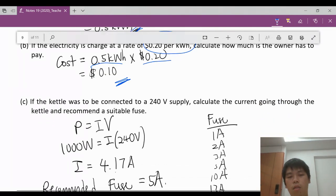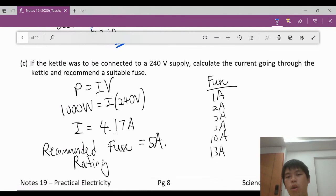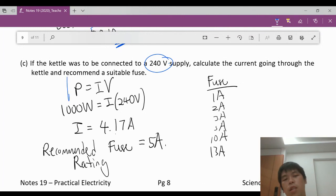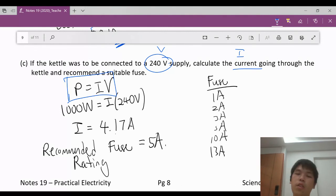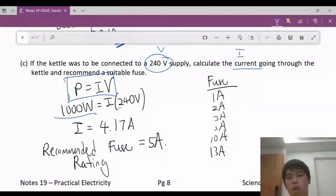So, if the kettle was to be connected to 240 volt supply, now you're connected to the mains in Singapore. Calculate the current going through the kettle and recommend a suitable fuse. So, we use P equals IV. Because we've got power, we want to find the current. We know that it's going through a potential difference of 240 or EMF. So, we put in the values. 1,000 watts, 240. Take note, this is watts, not kilowatts. We find that the current is 4.17 ampere.